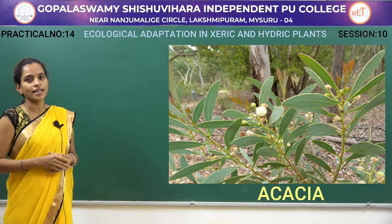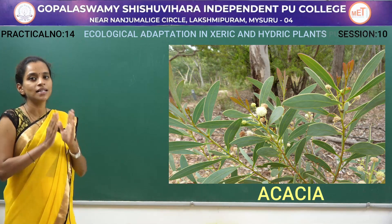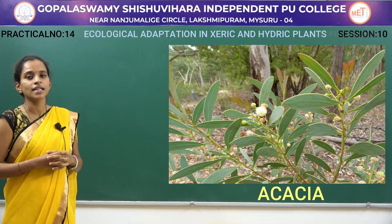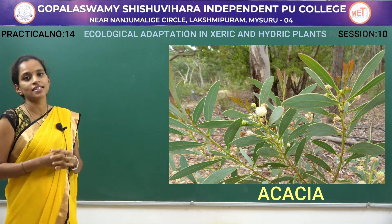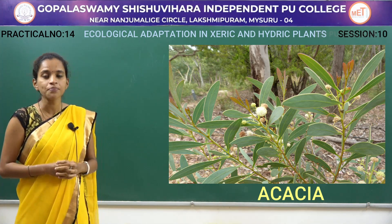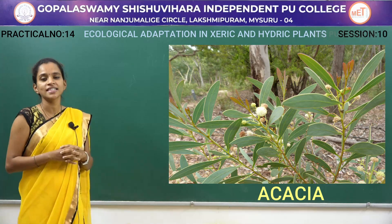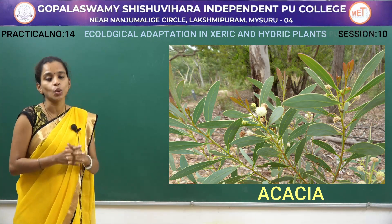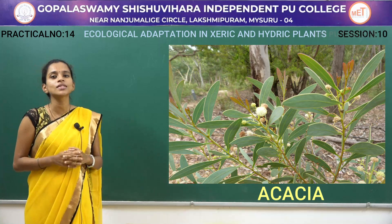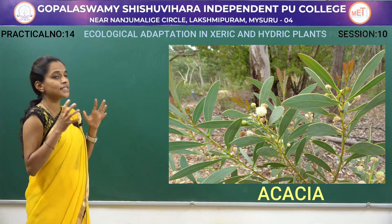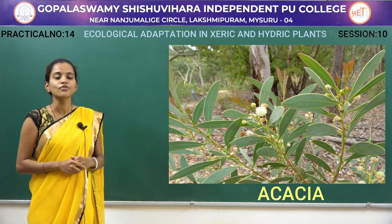The next plant you can see on the screen is Acacia. In case of Acacia you can see a bulged structure which is present just near the stem. Here the petiole is modified into a leaf-like structure called a phyllode. This phyllode carries the function of photosynthesis in case of Acacia. So the xeric adaptation in Acacia is that the petiole is modified into a phyllode so that they can carry out the photosynthesis process.